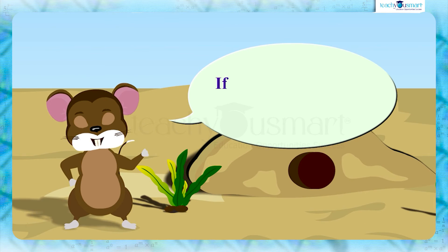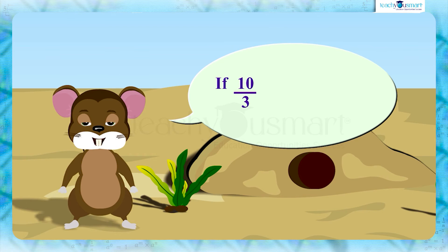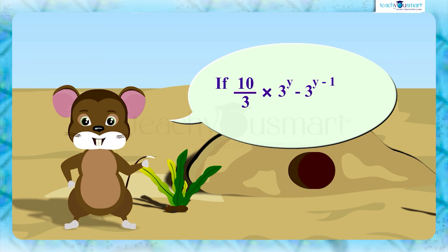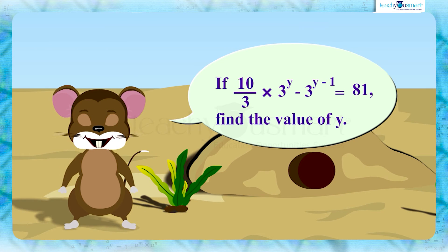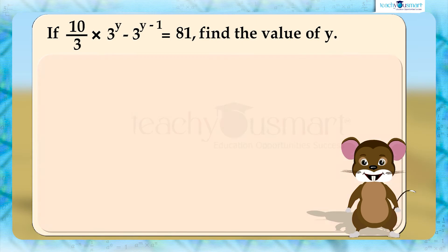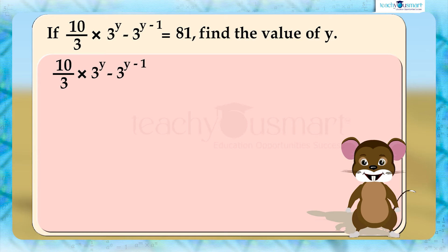If (10 by 3) multiplied by (3 raised to y minus 3 raised to y minus 1) equals 81, find y.